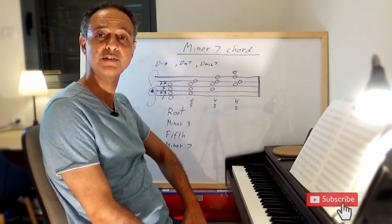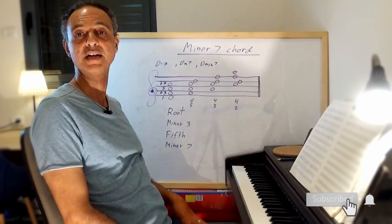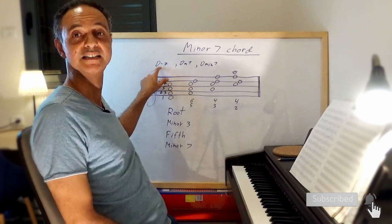You can find the minor 7 chord in literature in different ways. You can find it as D-7.